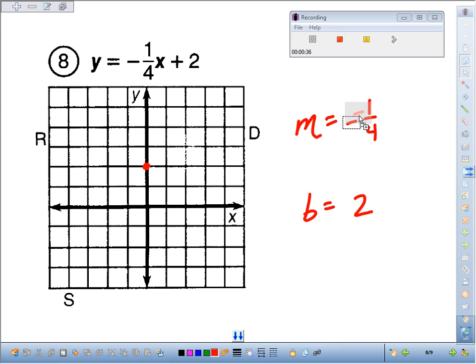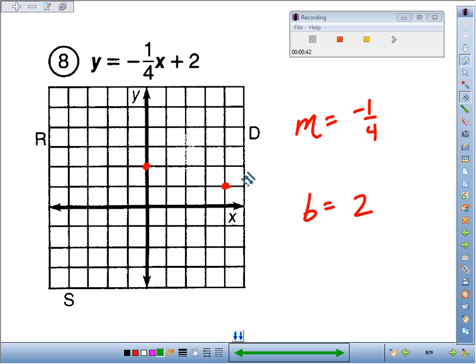So I like to associate the negative with the numerator. I'm going to go down one and right four spots. That'll give me another point on the graph. We'll find out that number eight is R.